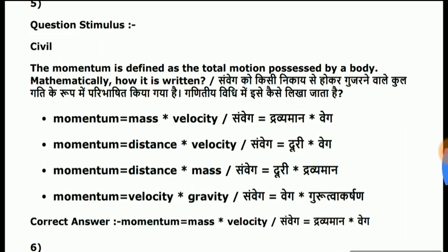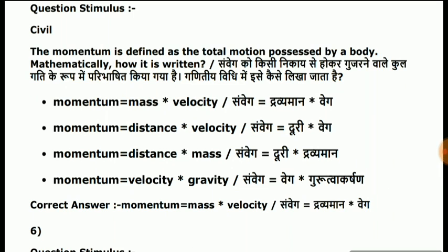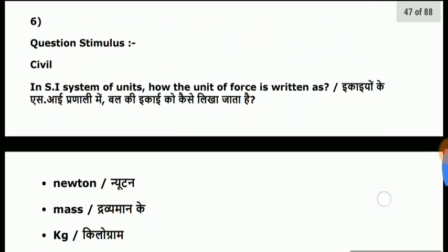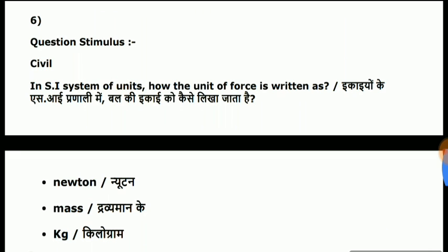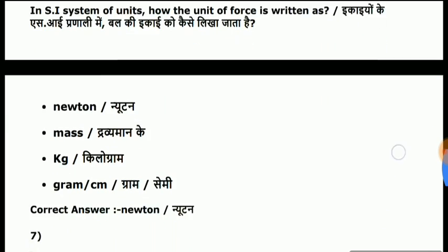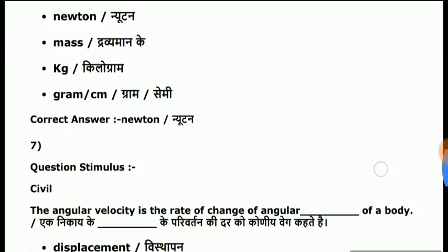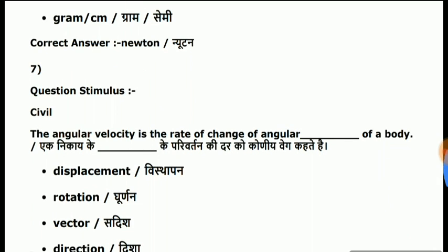The momentum is defined as the total motion possessed by a body. Mathematically, it is written as: momentum is equal to mass into velocity. Question six: in the SI system of units, how are the units of force written? Answer is Newton.